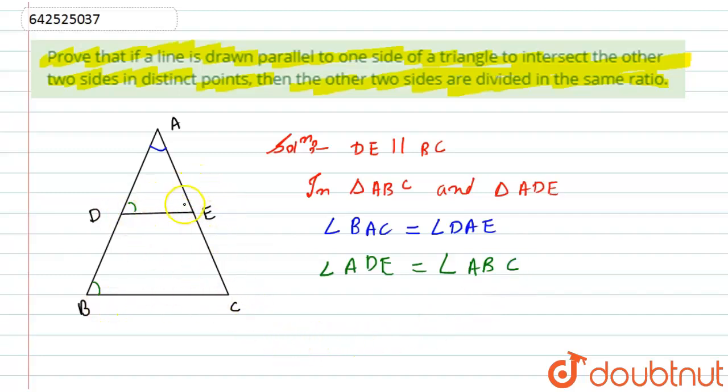Similarly, if DE is parallel to BC, these corresponding angles E and C will also be equal. So from here I can say that angle AED is equal to angle ACB.